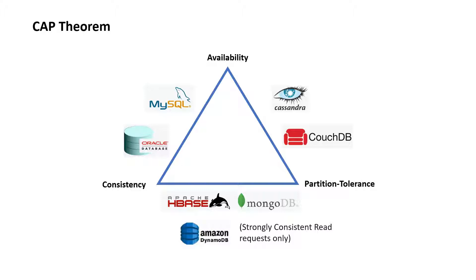The idea of CAP theorem is that you can have any two of these but not all three. So while designing your system, pick the two that you care about the most. Let's look at some real examples.